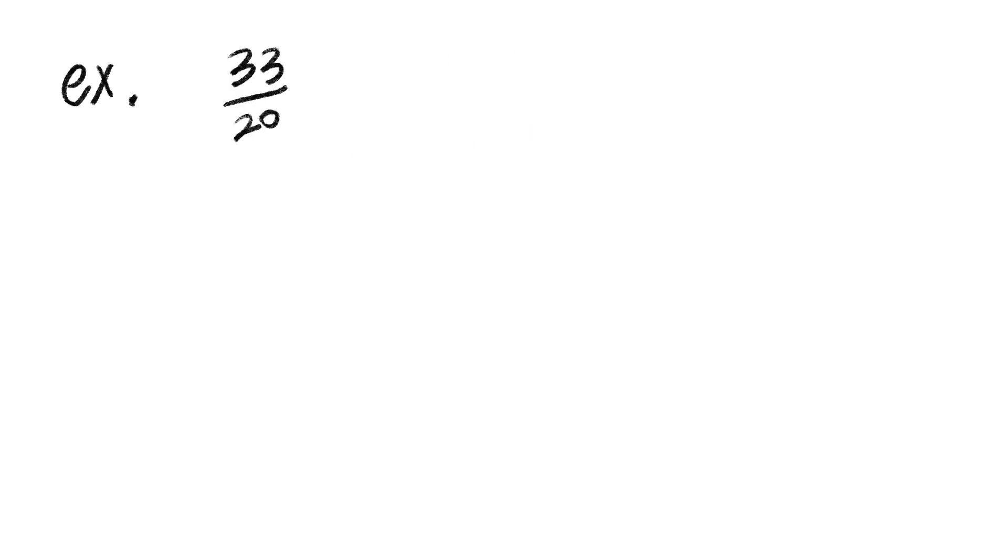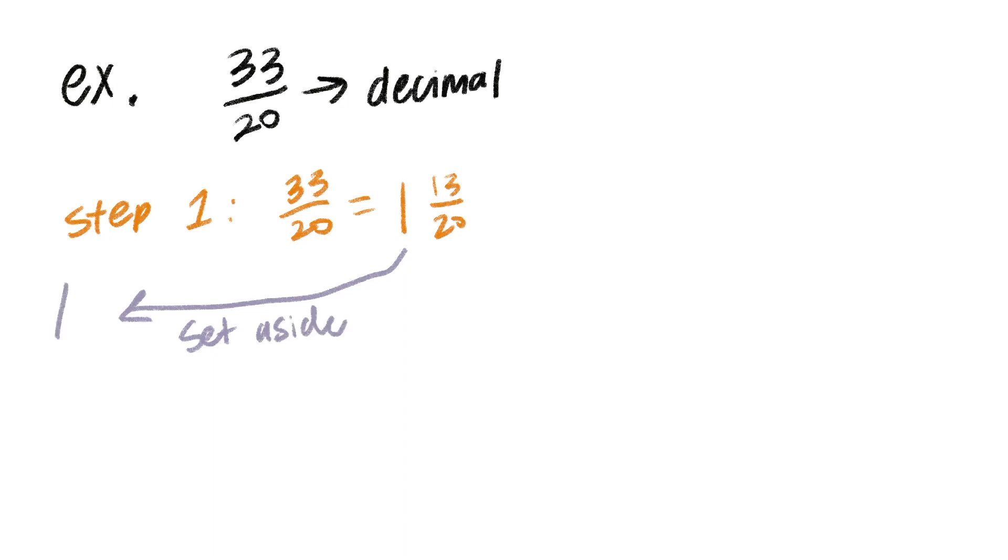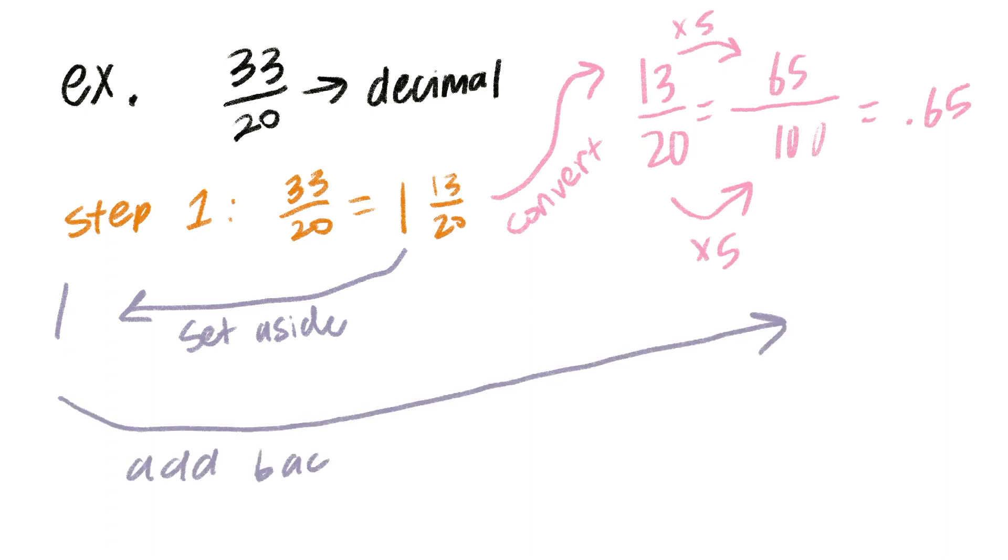So if I had 33 over 20, I'd split up the improper fraction to a mixed number to get 1 and 13/20. Let's set the 1 aside for now to isolate 13/20 and convert this to a decimal first. I then multiply the denominator by 5 to get 100 as the equivalent fraction's denominator, then multiply the numerator by the same thing, 5, to get 65. 65 hundredths is way easier to represent as a decimal: 0.65. And then you can just add the 1 we took out earlier to get the decimal representation of 33/20, which is 1.65.